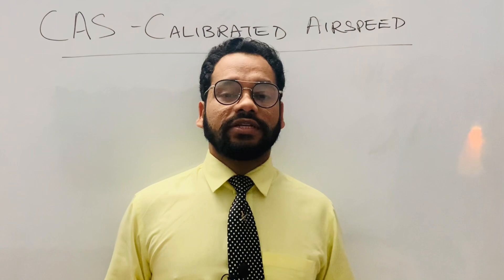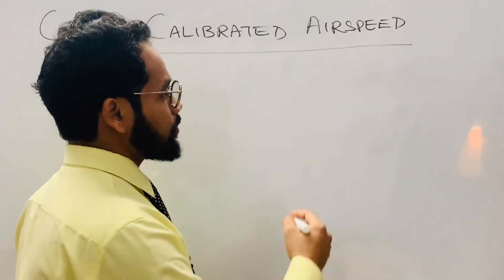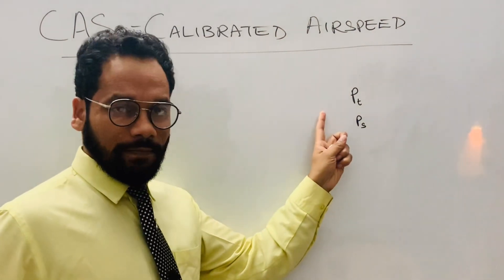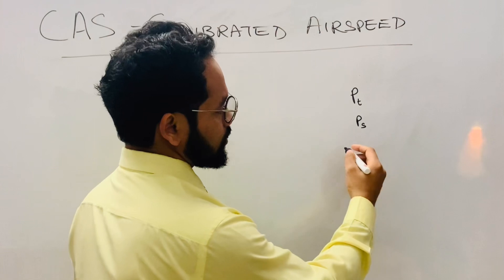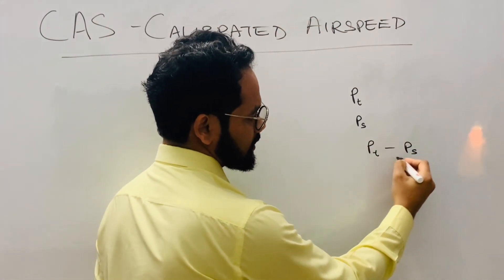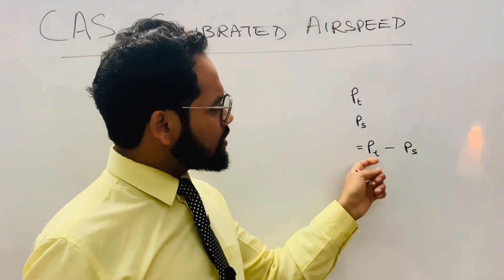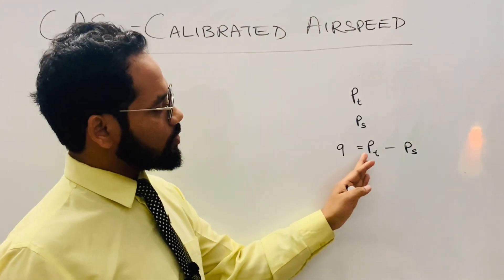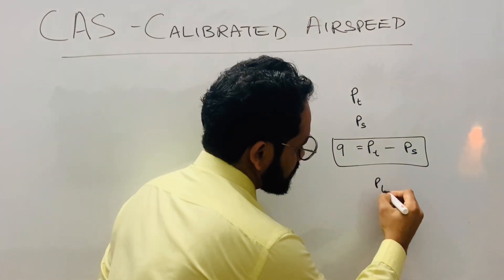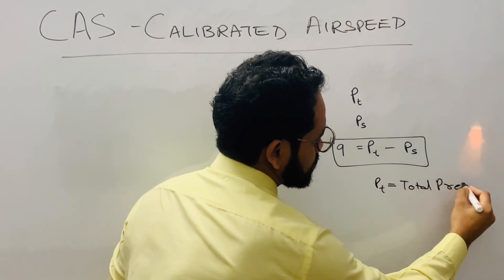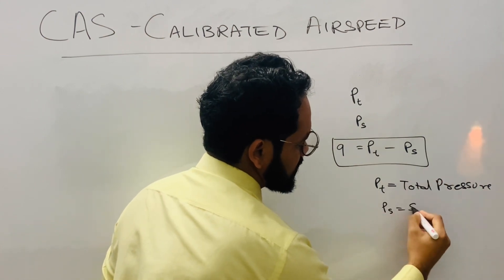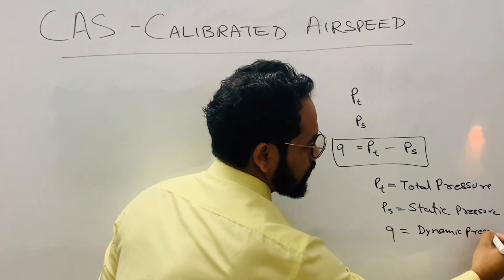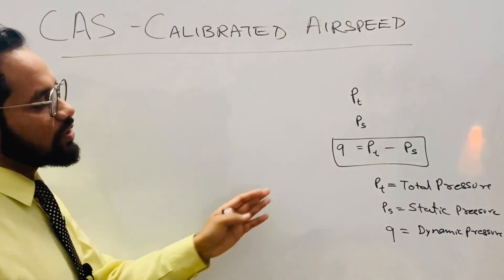So what is Calibrated Airspeed? Calibrated Airspeed is basically the difference between the total pressure, designated as PT, and the static pressure, PS. The difference between both of them is called Calibrated Airspeed. This difference is represented by the letter Q, which is called dynamic pressure. So dynamic pressure Q equals PT minus PS.